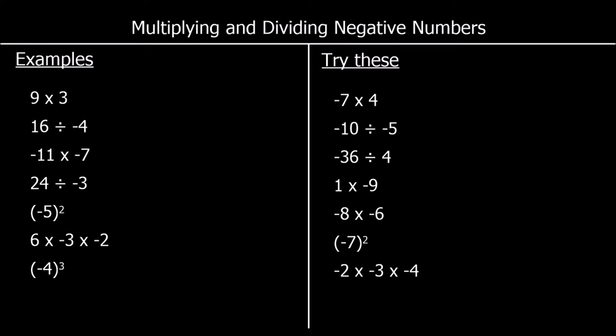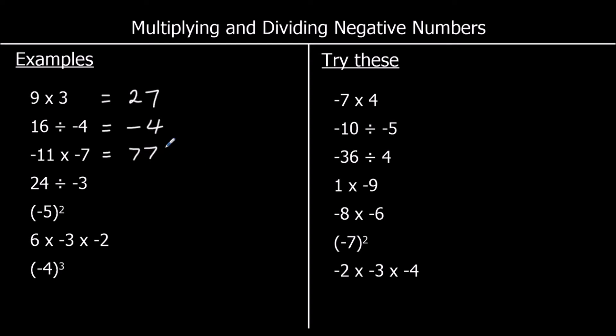Let's take a look at some examples. 9 times 3 — a positive times a positive is positive — and 9 times 3 is 27. For the second one, a positive divided by a negative is negative, and 16 divided by 4 is 4, so the answer is negative 4. For the third one, a negative times a negative is positive, and 11 times 7 is 77, so positive 77.